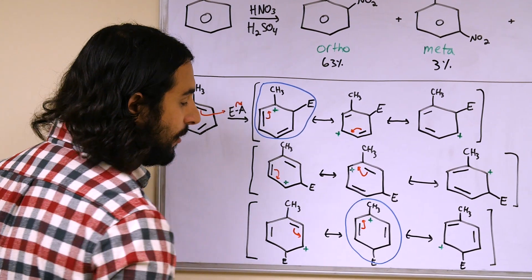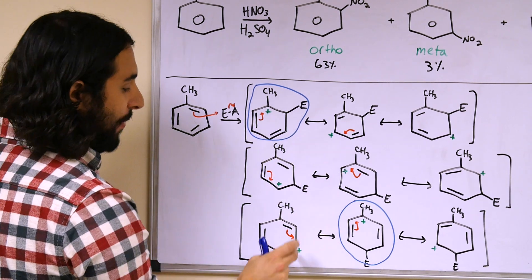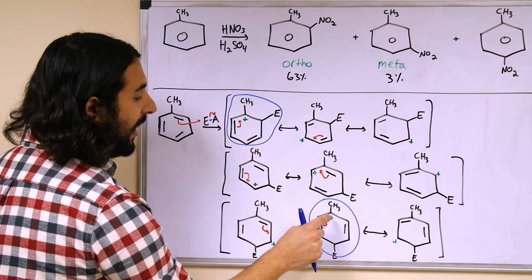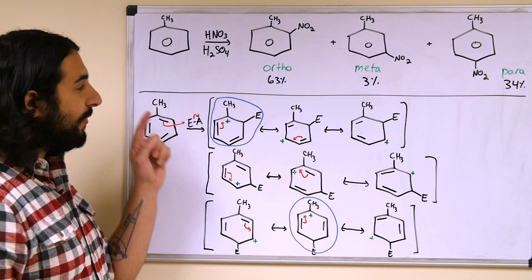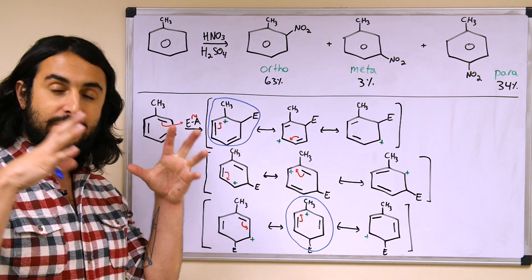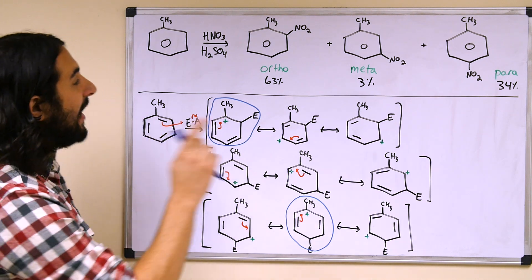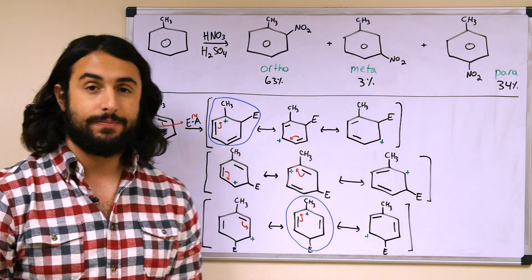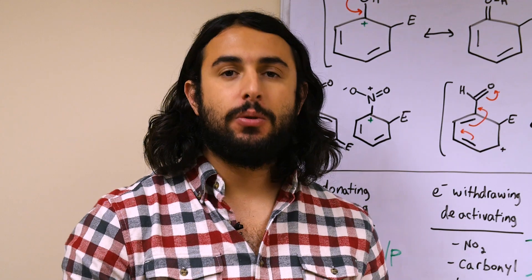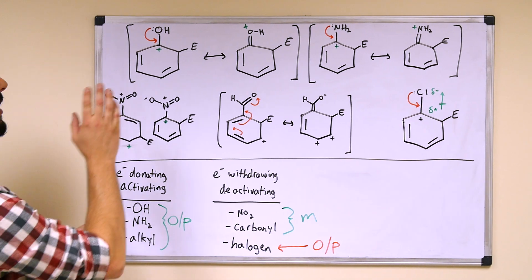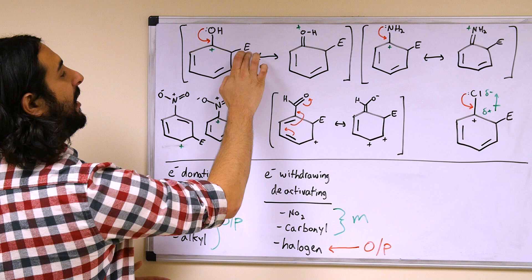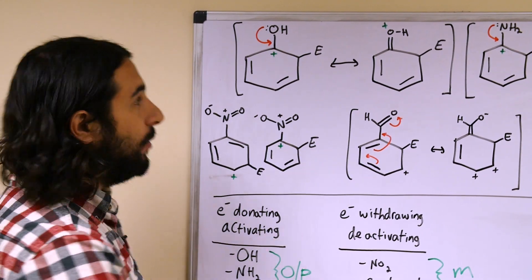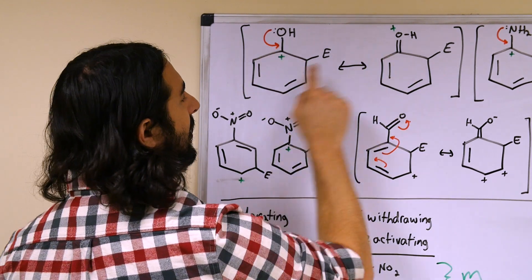The key takeaway is that only through ortho and para substitution can we get the carbocation on the arenium ion intermediate to be directly adjacent to whatever group was already present on the benzene ring. If that is an electron donating group, as with alkyl, it will stabilize the intermediate and be ortho/para directing — which is why nitration of toluene gives almost no meta substitution. For a hydroxyl group with ortho substitution, a resonance structure places the cation directly adjacent to the hydroxyl.